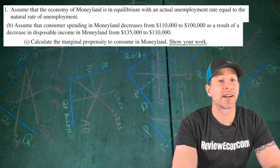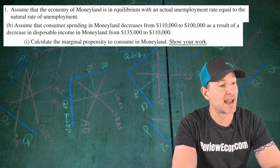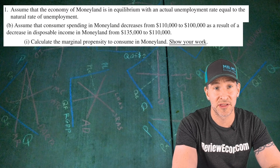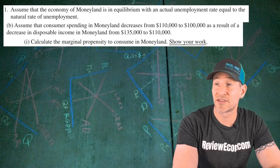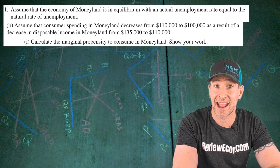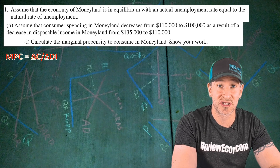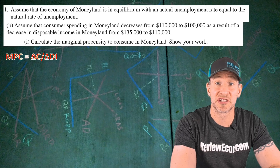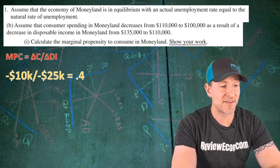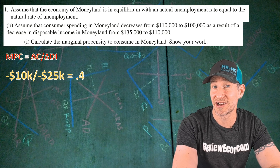For part B, consumer spending decreases from $110,000 down to $100,000, and at the same time disposable income falls from $135,000 down to $110,000. Based on these numbers we calculate the marginal propensity to consume. The formula is the change in consumer spending divided by the change in disposable income. Plugging in: negative $10,000 divided by negative $25,000 equals an MPC of 0.4. If you have that and show your work, you get the next point.